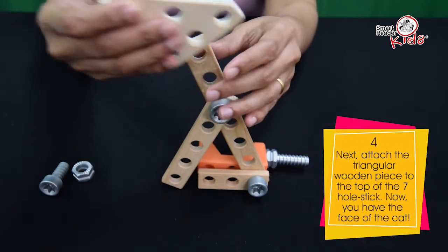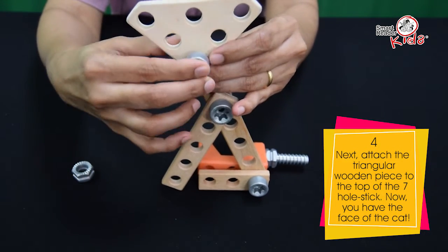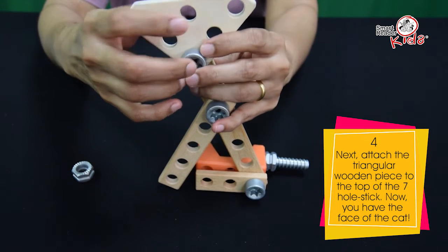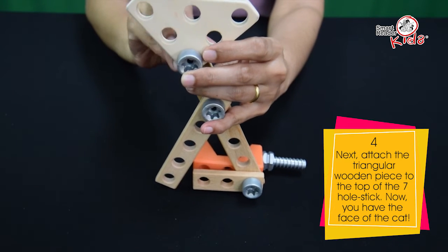Next, attach the triangular wooden piece to the top of the 7-hole stick. Now, you have the face of the CAT.